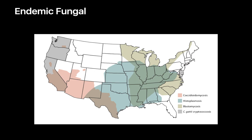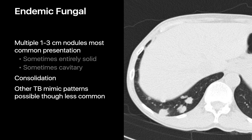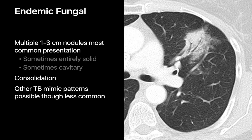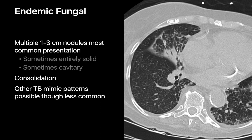Endemic fungal infections exist in many regions of the world. In the United States, histoplasmosis is endemic throughout the Ohio River Valley, coccidioidomycosis is endemic throughout the southwest, and cryptococcus is endemic along the west coast. These infections usually present as solitary or multiple one-to-three centimeter lung nodules that may be entirely solid or sometimes cavitary. Other patterns such as consolidation can occur, often in immunosuppressed patients, and rarely imaging presentations that mimic TB — such as apical fibroproductive opacities or a miliary random nodular pattern — can occur.